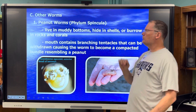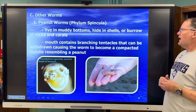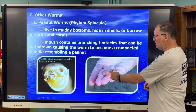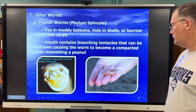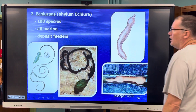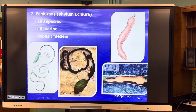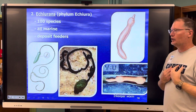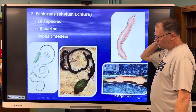Other kinds of worms are called peanut worms. They live in muddy bottoms, burrow in rocks, and hide in shells. They have branching tentacles that can be withdrawn, causing the worm to be compacted and look like a peanut — that's why they have that name. Here are some of the tentacles that come out of the end to feed. There are about 100 species, all of them marine. They are deposit feeders and have a really weird shape to them.